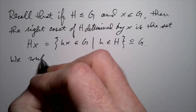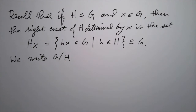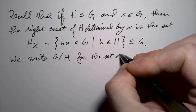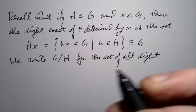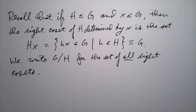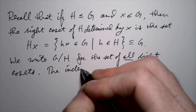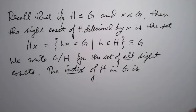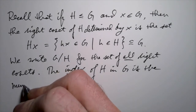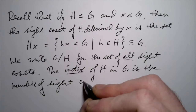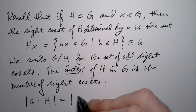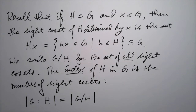We write G mod H — G with a slash that's supposed to sort of remind us of division — for the set of all right cosets of H. And then the index of H in G is the cardinality of this set; it's the number of right cosets. In symbols, we write the index as G colon H, and it's exactly the size of this set of cosets — the number of different right cosets.